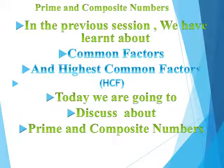Different types of numbers are there — 0, 1, 2, 3, 4, 5, 6 and so on. But among these numbers, some numbers are Prime Numbers and some numbers are Composite Numbers. So let's see what is meant by Prime and Composite Numbers.